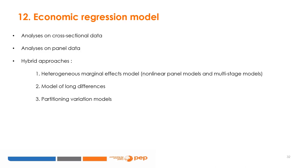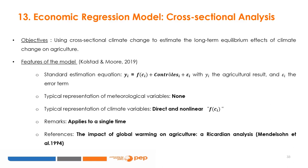For economic regression models, the literature distinguishes cross-sectional analysis, analysis based on panel data, hybrid approaches which include models for dealing with heterogeneous marginal effects, models of long differences, and approaches to partitioning variation. Cross-sectional regression makes it possible to use cross-sectional variations in climate to estimate the long-term equilibrium effects of climate change on agriculture.